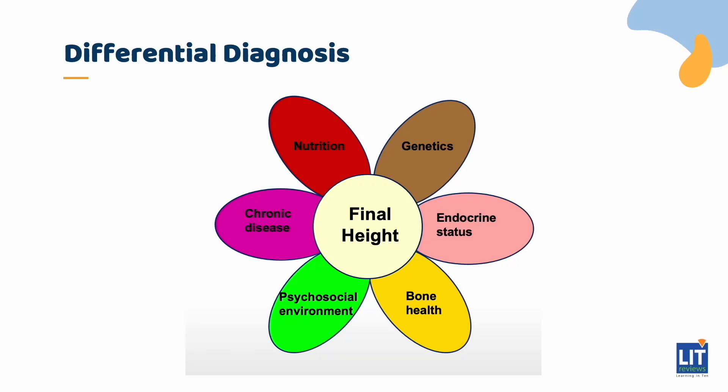Before you can proceed with taking a useful history and performing an effective physical examination, you need to first be aware of the differential diagnoses for short stature. This diagram shows that, broadly speaking, there are six main factors that determine what the final adult height of any individual will be, though there may be some overlap.